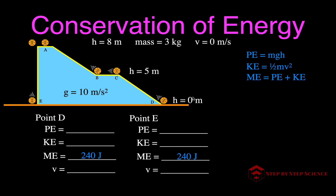Now for point D at the bottom of the hill. The height is zero, so the potential energy is mg times zero, which equals zero joules — no potential energy. All the potential energy has been converted into kinetic energy, so the ball has 240 joules of kinetic energy at the bottom. You can see that the potential energy at the top equals the kinetic energy at the bottom — height is converted into velocity.